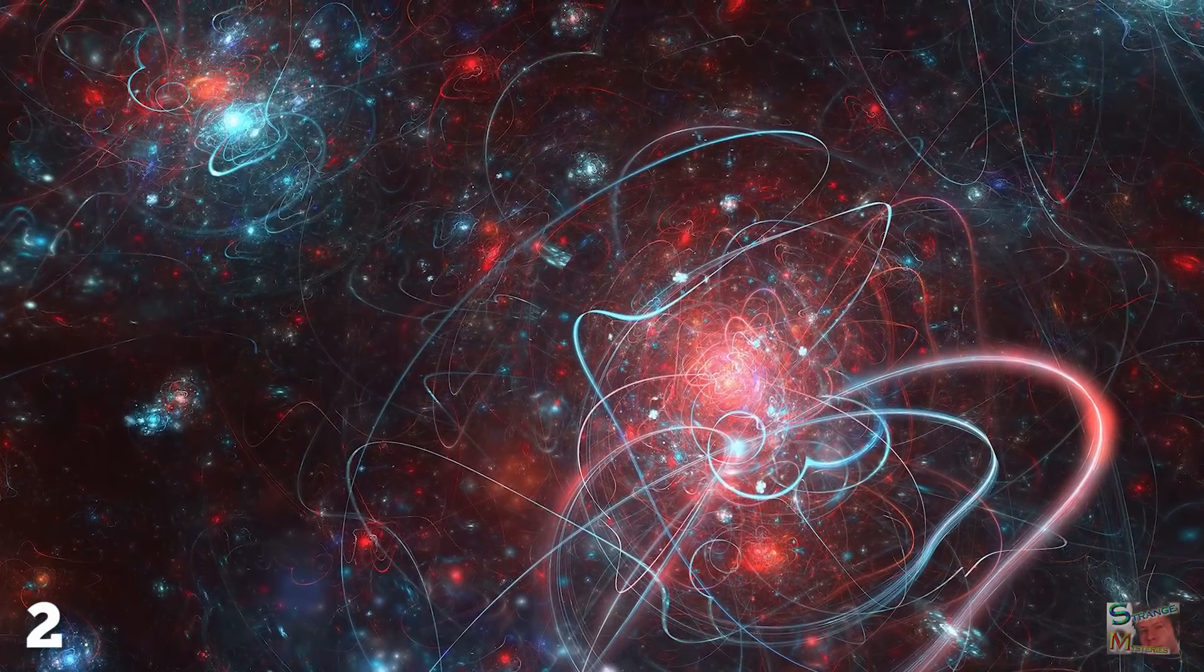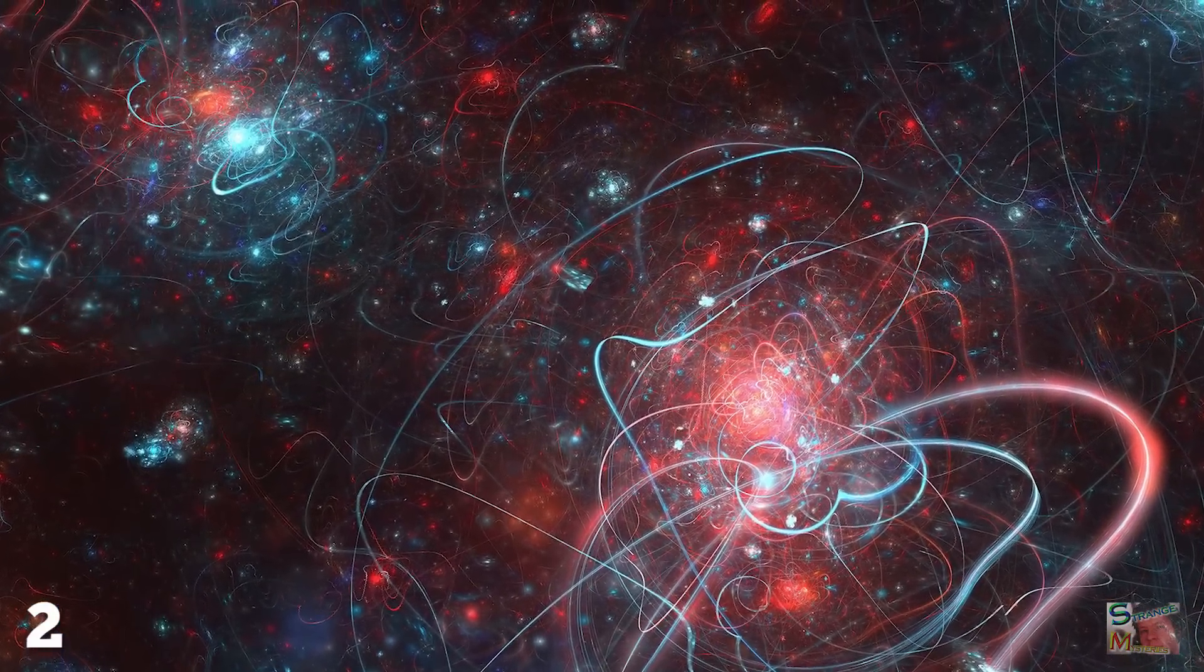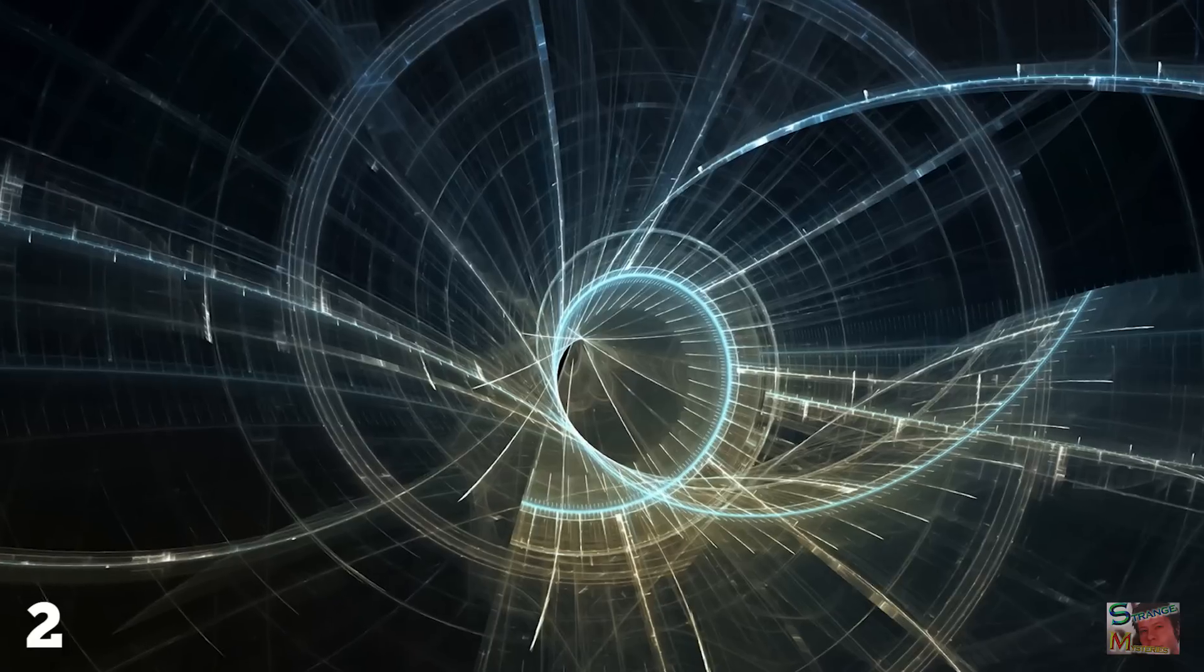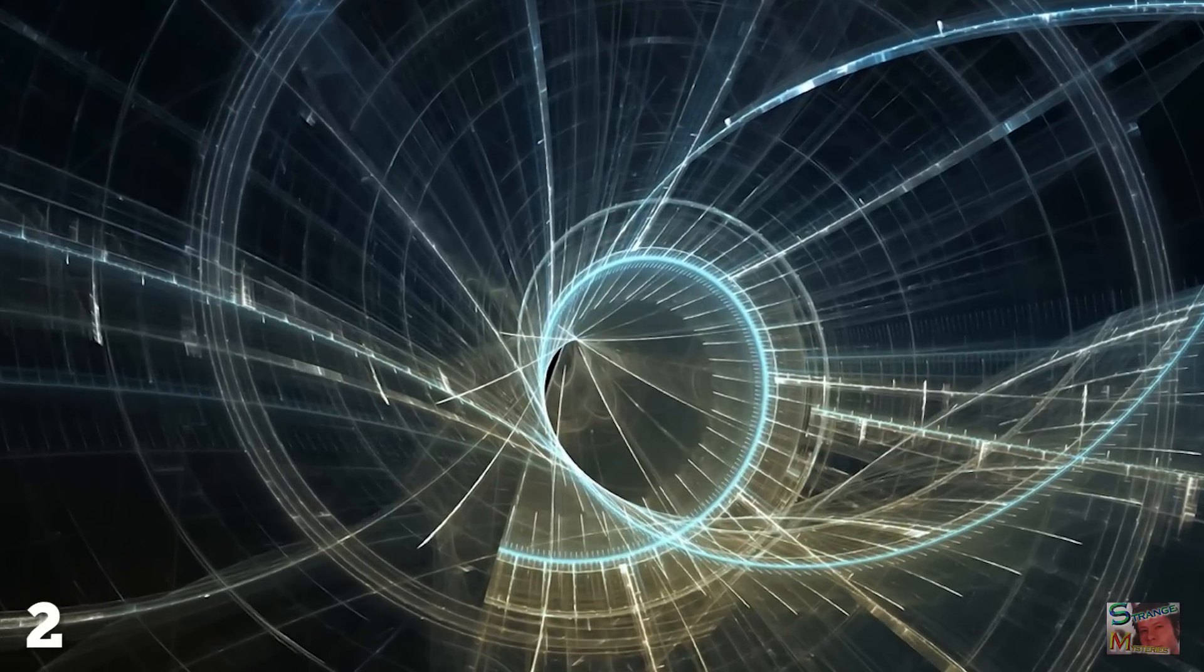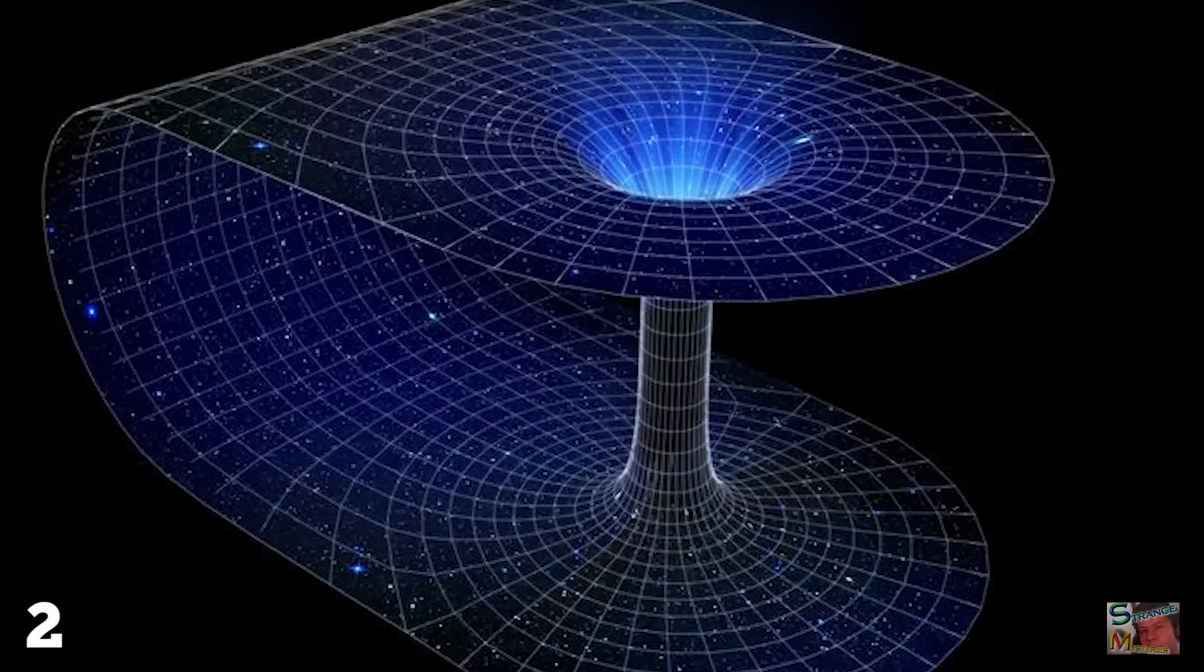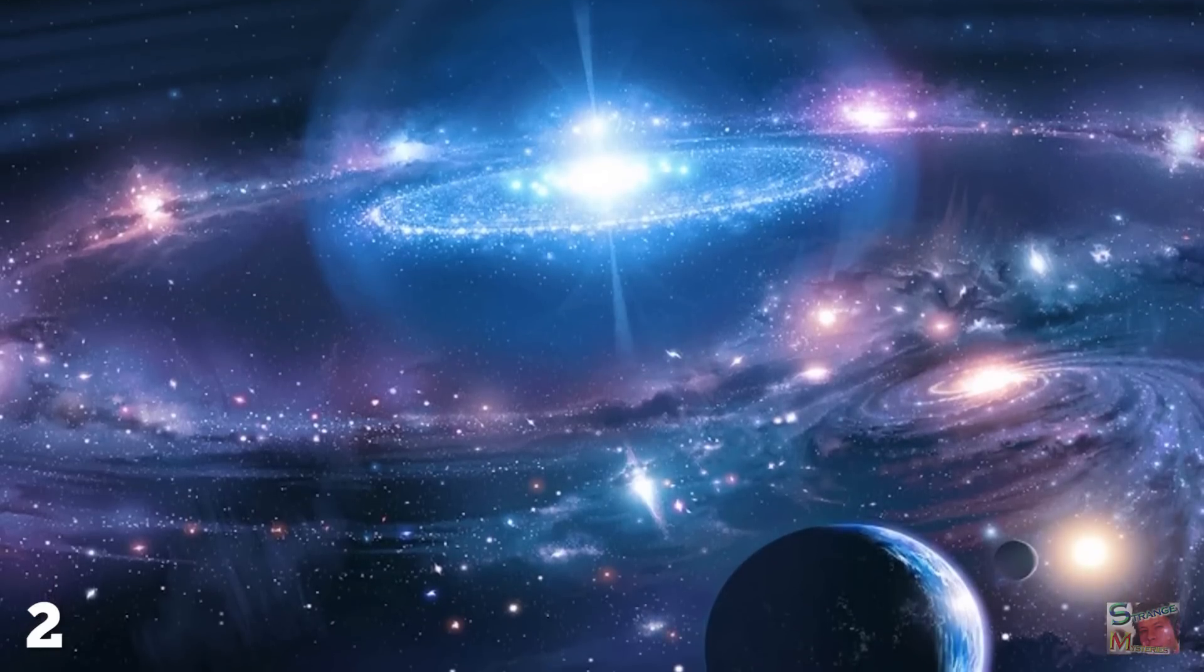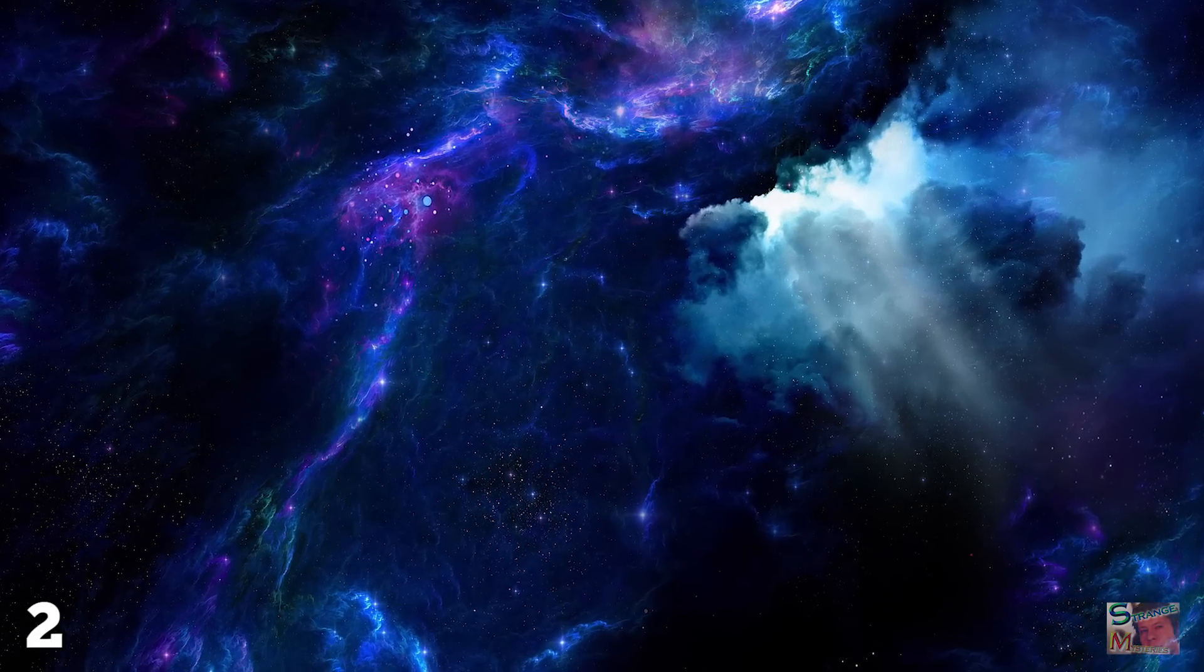However, according to string theory, space-time has 11 different dimensions, with another theory suggesting as many as 26. So even if we do discover a new dimension, it may not be the one we need to travel across the multiverse. And once we find the dimension we're looking for, it's still going to take some time to figure out how it works. Time is considered to be the fourth dimension, but we're still figuring out how to deal with this, let alone seven more dimensions.